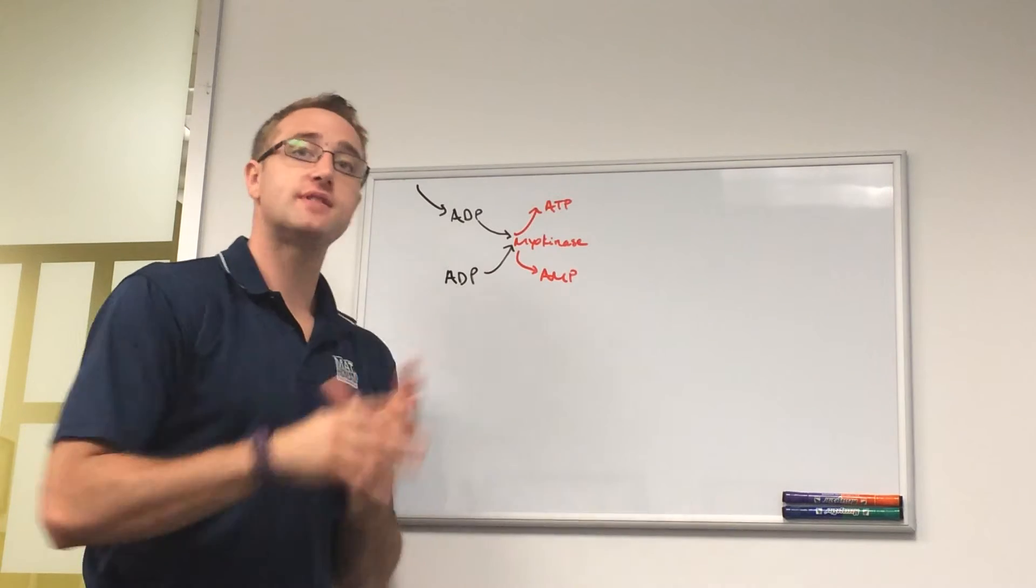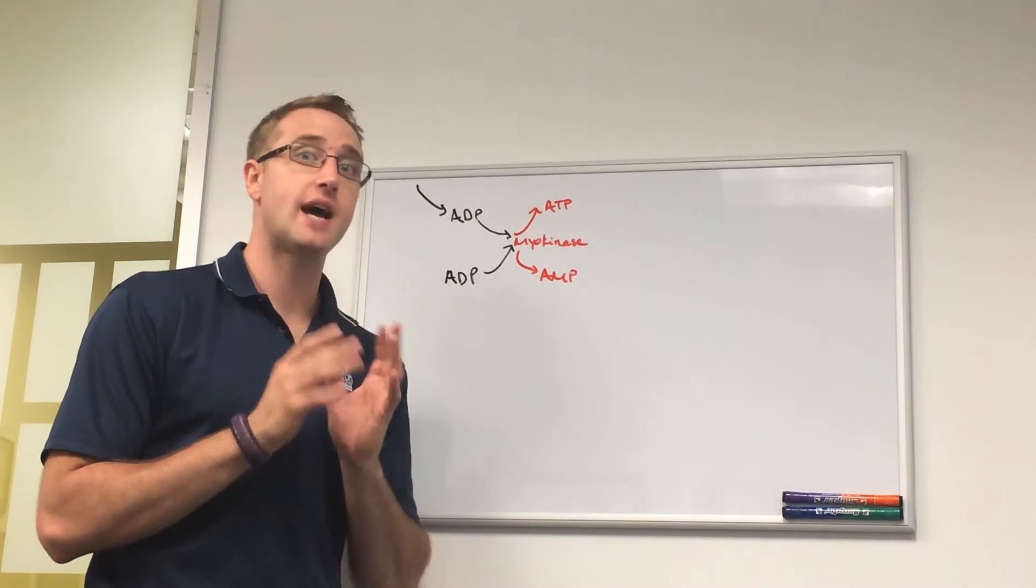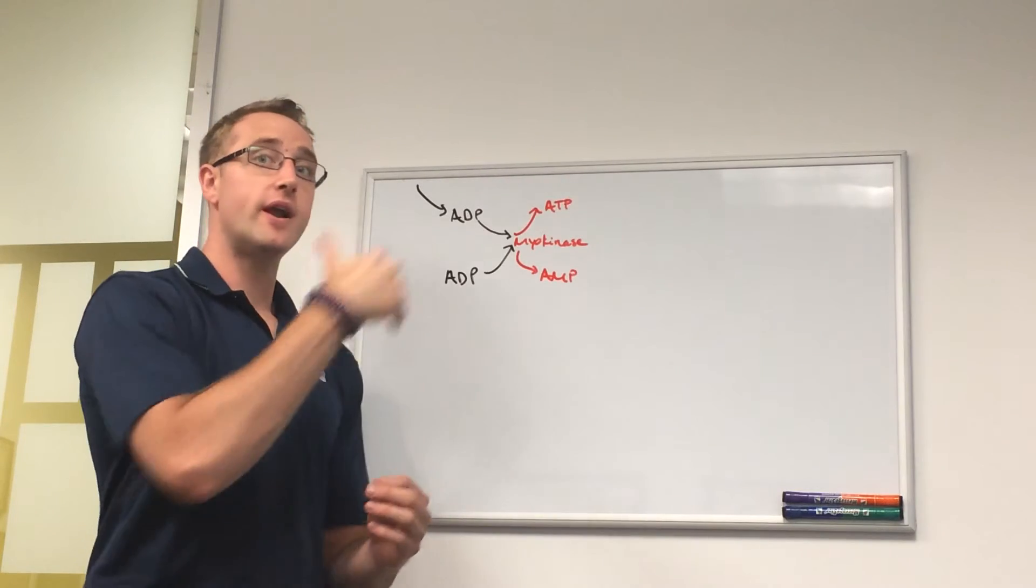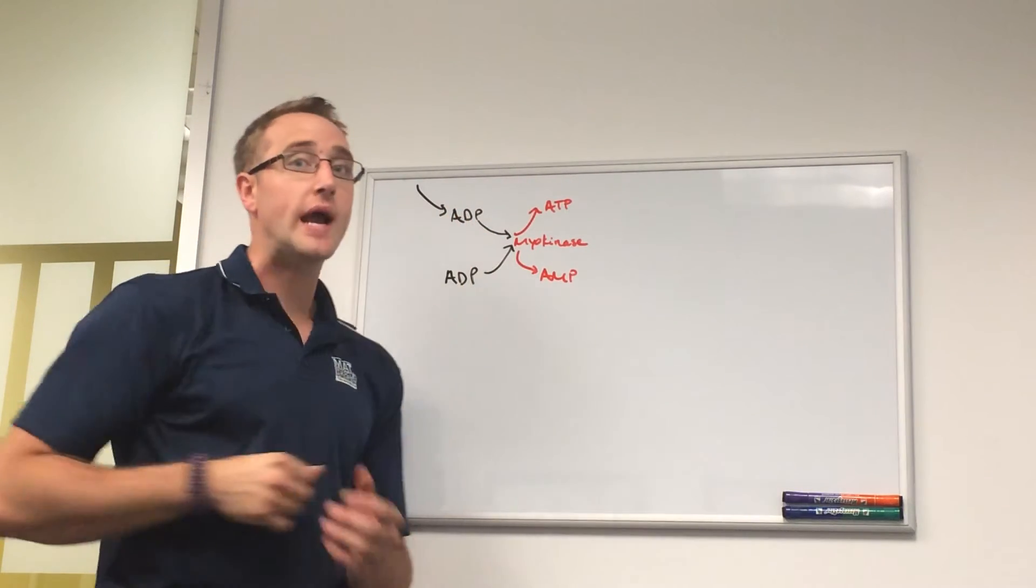The number of times this cross-bridging and uncross-bridging process happens, the greater those two, the more ADP will be produced, and the more this reaction will take place.